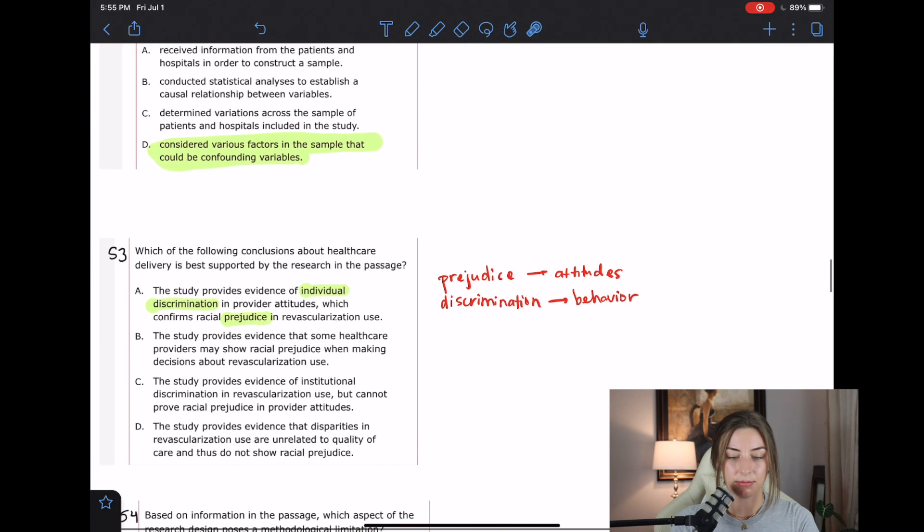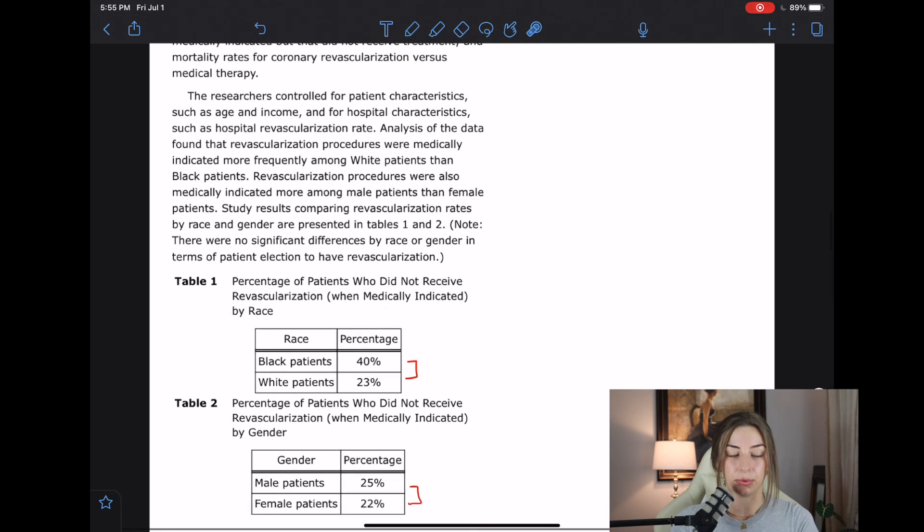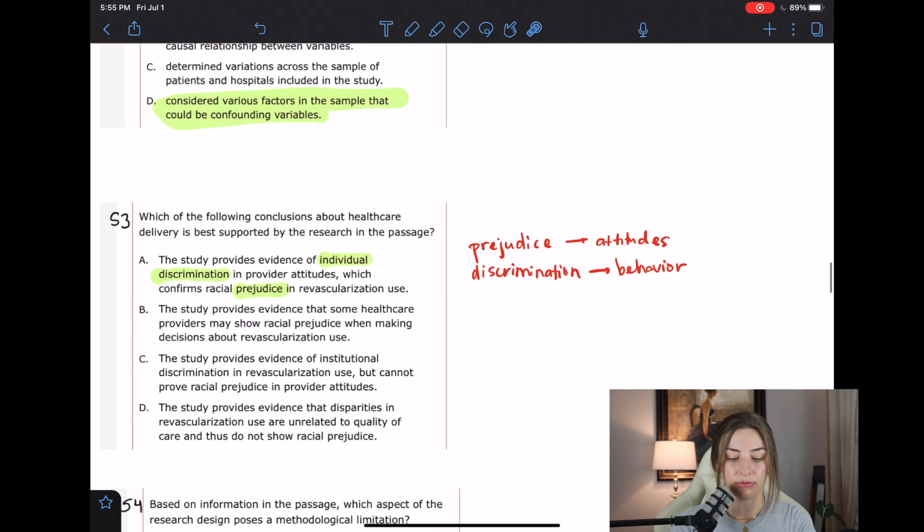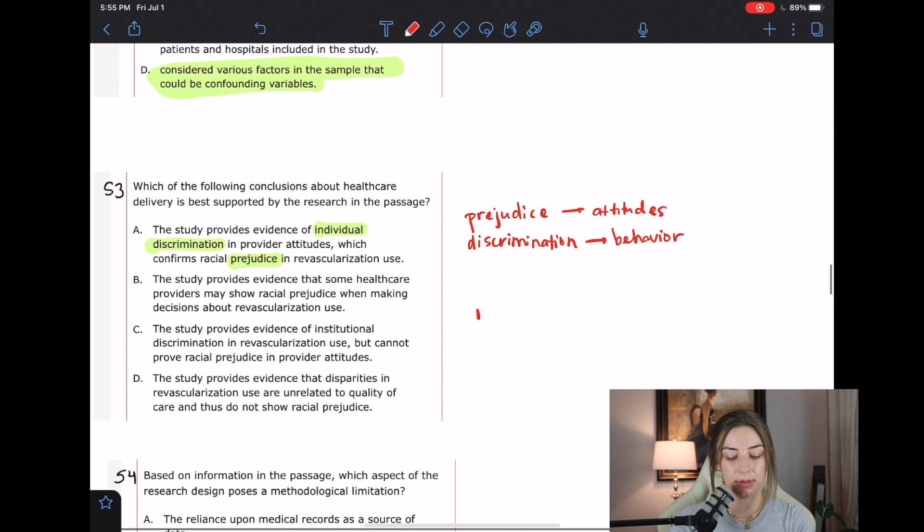So there weren't any, if I remember correctly, there were not any specific examples of providers treating people in different or discriminating towards people individually. It reminds me more of not individual discrimination, but institutional discrimination. So those are also two that kind of get pinned up against each other. So make sure that you are able to pick those apart.